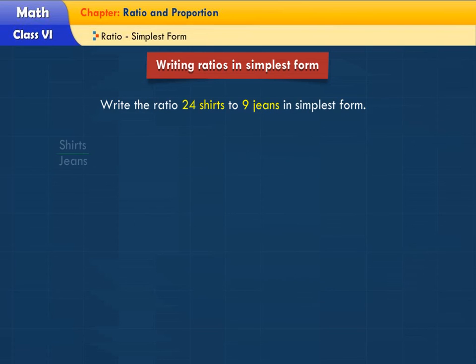Write the ratio 24 shirts to 9 jeans in simplest form.